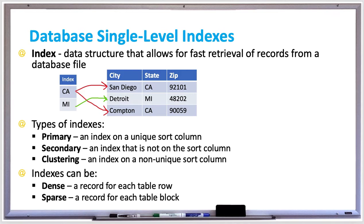When the database is executing a SELECT query, it can perform a table scan or an index scan. A table scan reads table blocks directly without accessing the index, and an index scan reads the index blocks to find the table blocks it's looking for. The percent of table rows selected by a query is called a hit ratio. When a SELECT query is executed, the database examines the WHERE clause and does a table scan if the hit ratio is high, or it looks for an index column with an index scan.